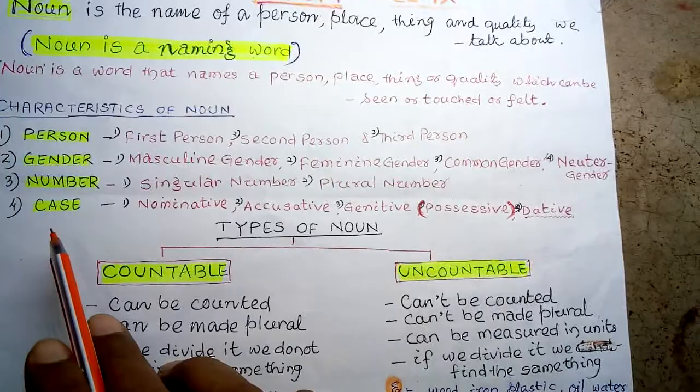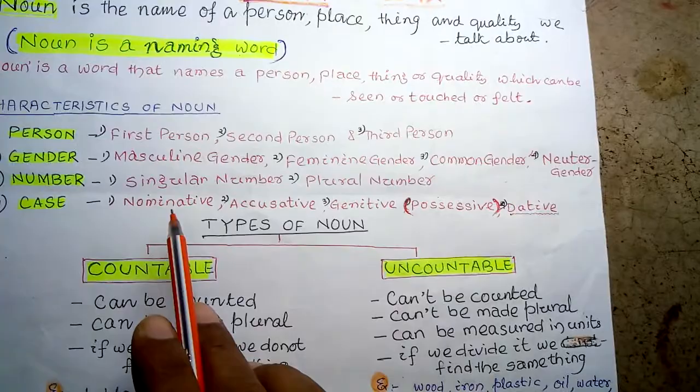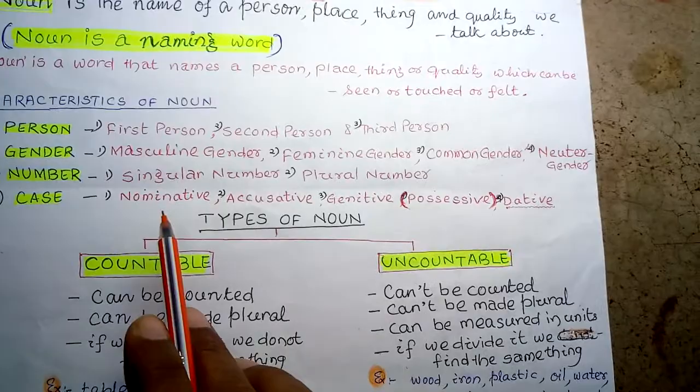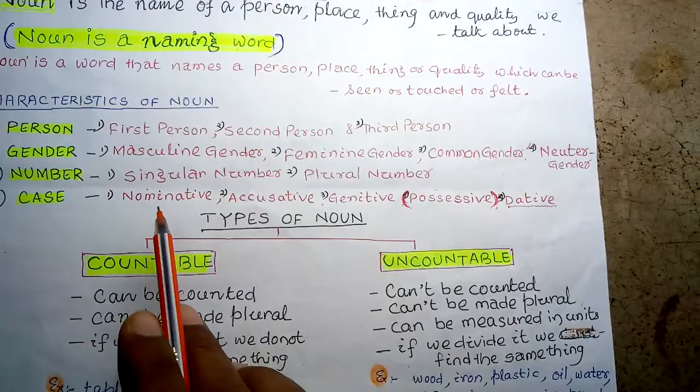The last characteristic is case. Case is of four types: nominative, accusative, genitive, and dative. Genitive refers to the possessive. In modern grammar, three cases are commonly discussed: nominative, accusative, and genitive.